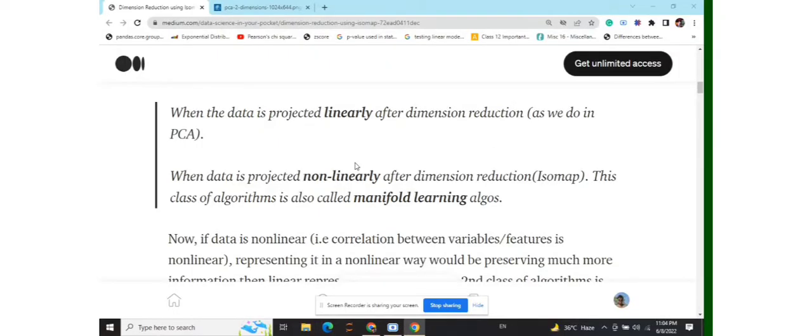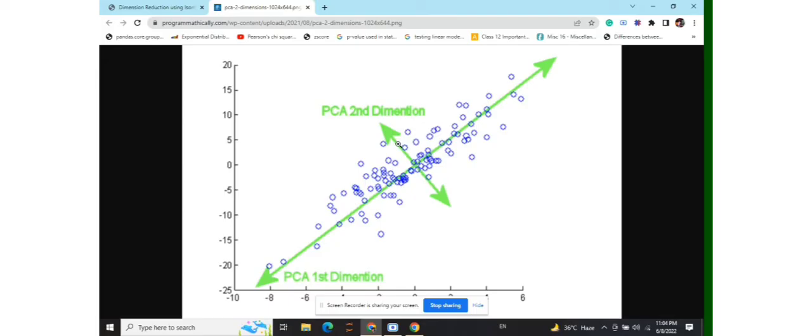Some of you might be having this question: what would happen if we use a linear dimension reduction algorithm like PCA over a nonlinear dataset? If you remember PCA, the final output looks something like this—straight lines perpendicular to each other. Now imagine a nonlinear dataset. If we represent such a dataset with straight lines, we'll be losing out on a lot of information.